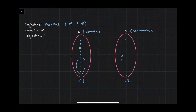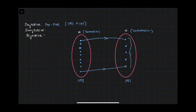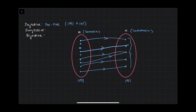A surjective function is when the range of the function is the same as the co-domain. So all points in M have to be matched to points in N, and all points in N need to be matched — meaning |M| ≥ |N|. A bijective function is when a function is both injective and surjective, so |M| = |N|.